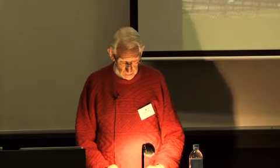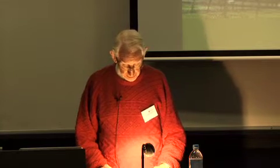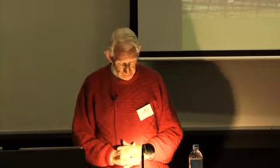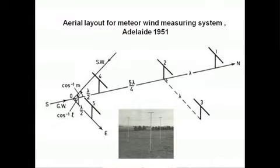We acquired a surplus wartime radio transmitter, adapted it to generate a kilowatt of continuous wave transmissions, and installed it in a small room on the second floor of the old physics building. As the building had a tiled roof, we constructed a simple antenna system placed in the ceiling space above the transmitter. Receivers and recording equipment were installed in a building near Salisbury. David Robertson pointed out that we could determine the direction of arrival of echoes from meteor trails by recording signals on three-spaced antennas — shown diagrammatically on the next slide, with a photograph of three of those antennas, and in the far distance, the Adelaide Hills.